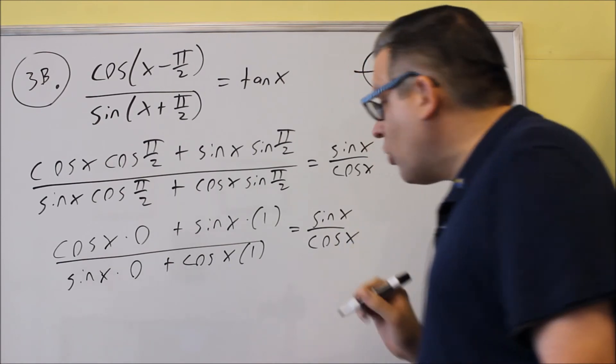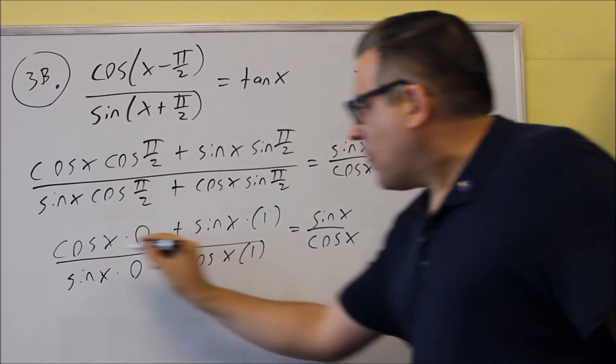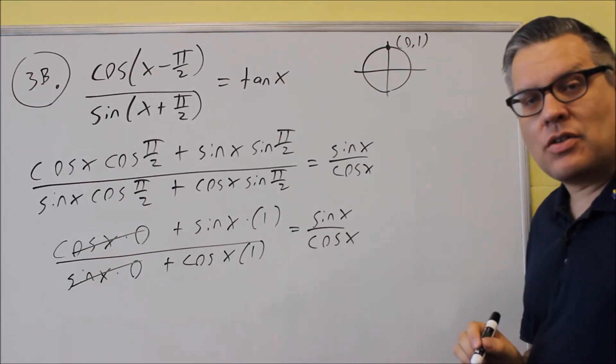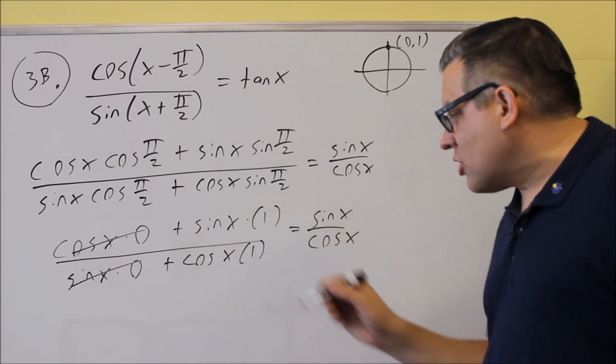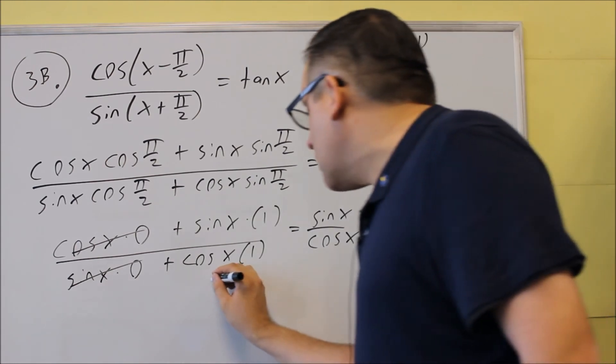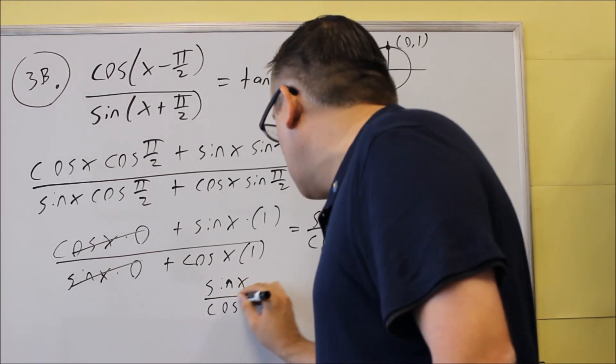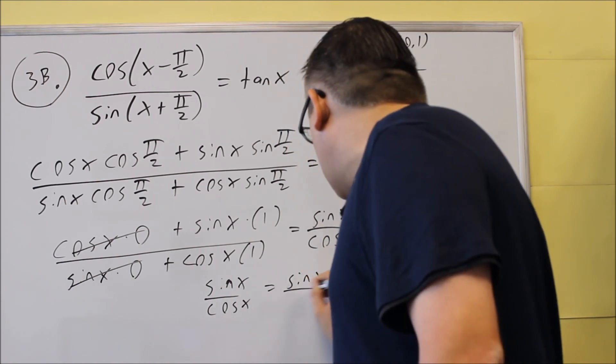What you'll notice is this is going to cancel, and that cancels because it's being multiplied by 0. So those are going to go away. Notice all we have left is sine x over cosine x. So we have sine over cosine equals sine over cosine.